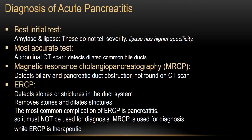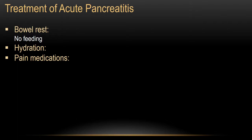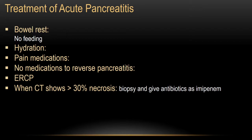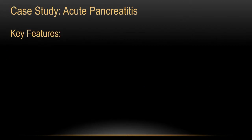Treatment of acute pancreatitis includes bowel rest — put in a nasogastric tube, no feeding — to remove secretions. Also hydration and pain medications, as it is a very painful condition. There is no specific medication to reverse pancreatitis. ERCP is therapeutic. When CT shows more than 30% necrosis, take a biopsy, and antibiotics such as imipenem may be needed. If the biopsy shows infected necrotic pancreas, surgical debridement may be required.